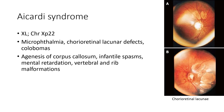The first eponym we will discuss is Aicardi syndrome. It is an X-linked disorder. The ocular features include microphthalmia, chorio-retinal lacunae defects and colobomas. These pictures show fundus images of chorio-retinal lacunae in a case of Aicardi syndrome. The systemic features include agenesis of corpus callosum, infantile spasms, mental retardation, and vertebral and rib malformations.